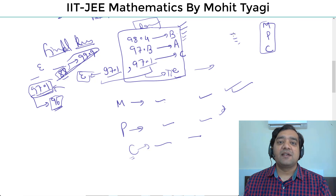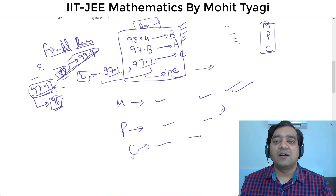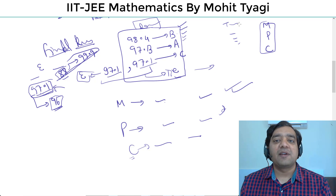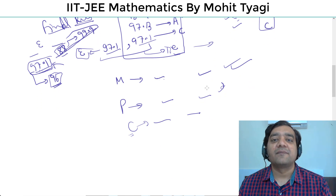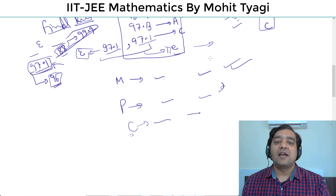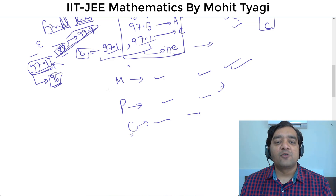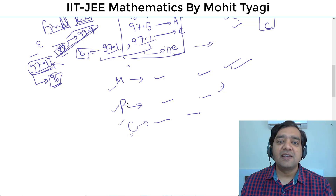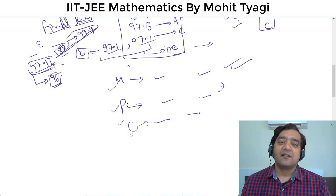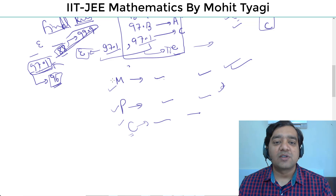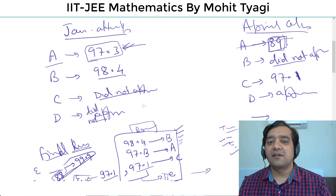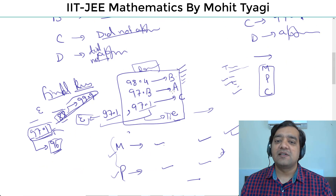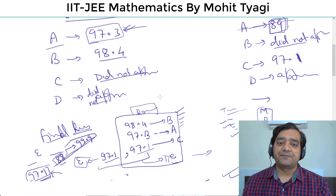पहले क्या होता था — अगर marks के basis पे देखना हो तो Math में marks ज़्यादा आए, फिर Physics में, फिर Chemistry में। Marks equally आएगा क्योंकि अगर total same है तो Chemistry में जाएगा। यहाँ पे ऐसा नहीं है — यहाँ percentile जो है वो Math, Physics और Chemistry का average नहीं है, या इनका sum by 3 नहीं है। तो ऐसा हो सकता है कि चारों चीज़ें अलग-अलग हों। इसी तरह rank बनेगा और उसके हिसाब से branches allot होंगी।